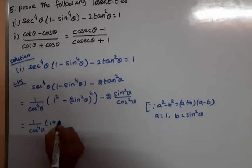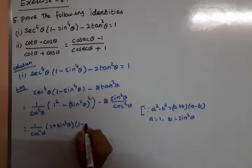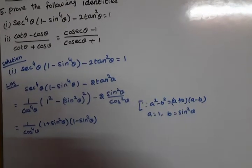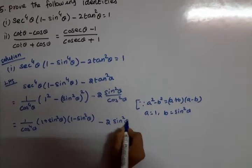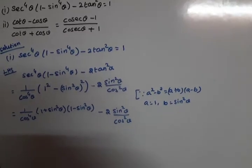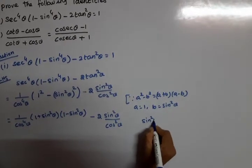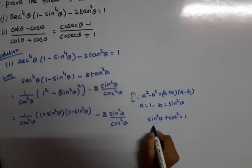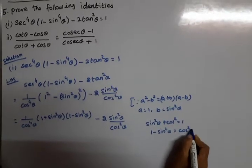Now we have (1 plus sin²θ) into (1 minus sin²θ). We know that sin²θ plus cos²θ equals 1, so 1 minus sin²θ equals cos²θ.